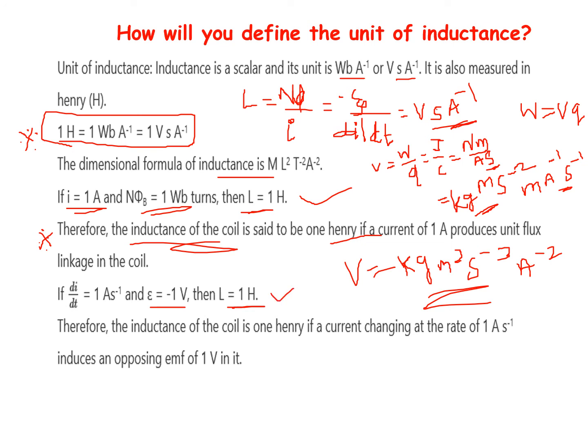This is the mathematical and theoretical formula. Therefore, the inductance of a coil is 1 henry if a current changing at the rate of 1 ampere per second induces an opposing EMF of 1 volt in the coil. This is the two-mark question definition.